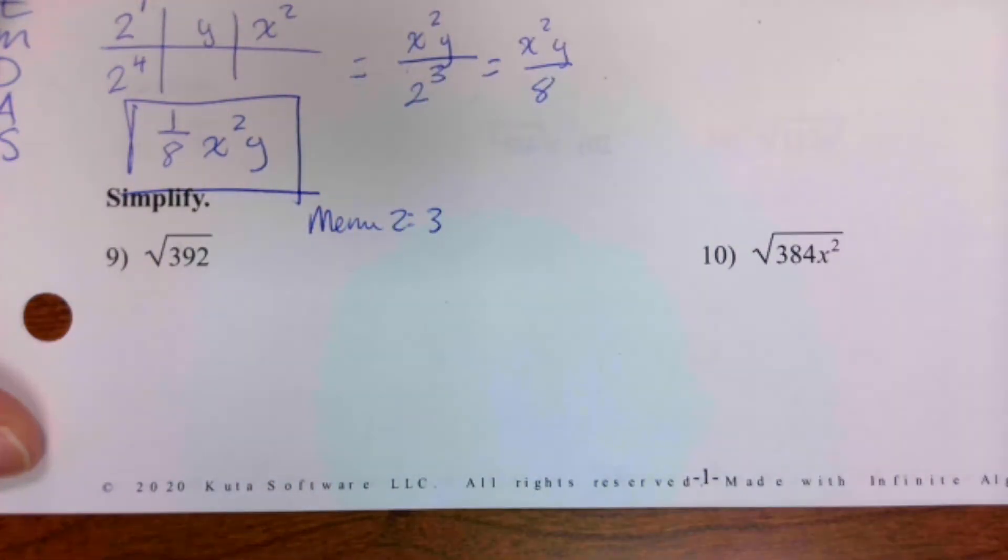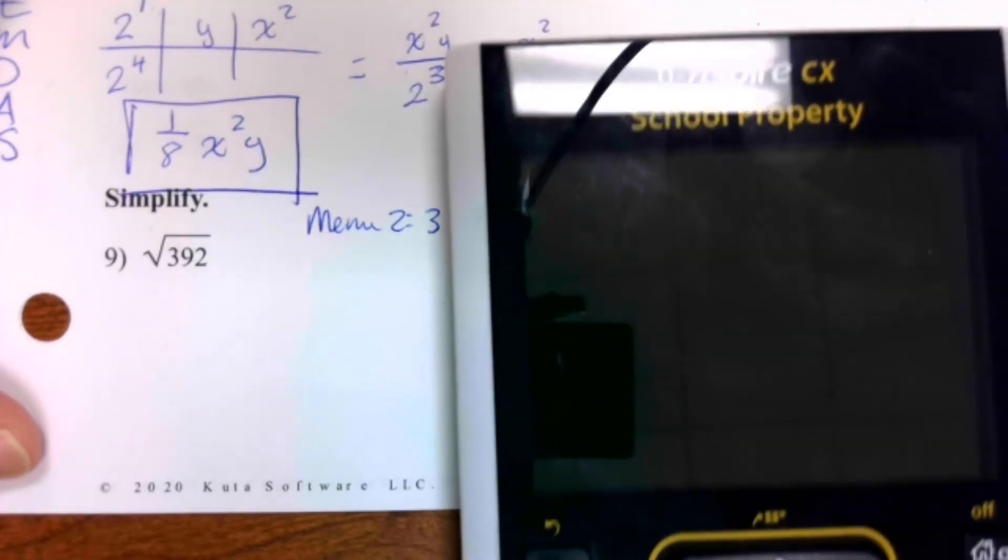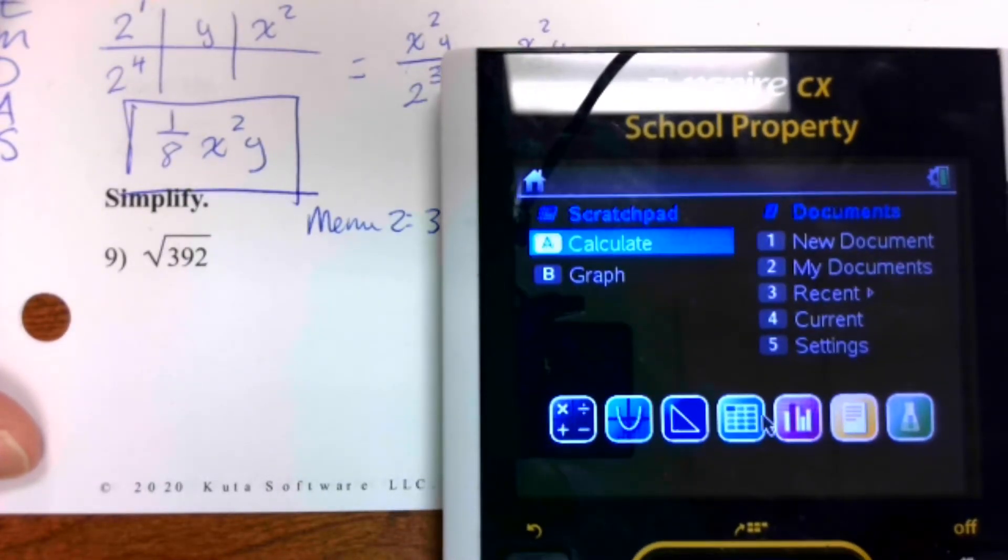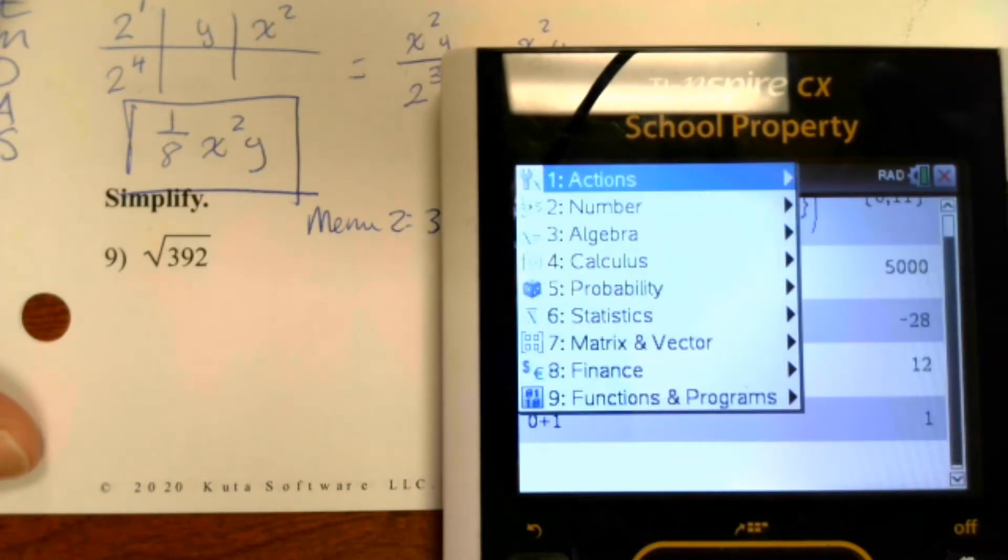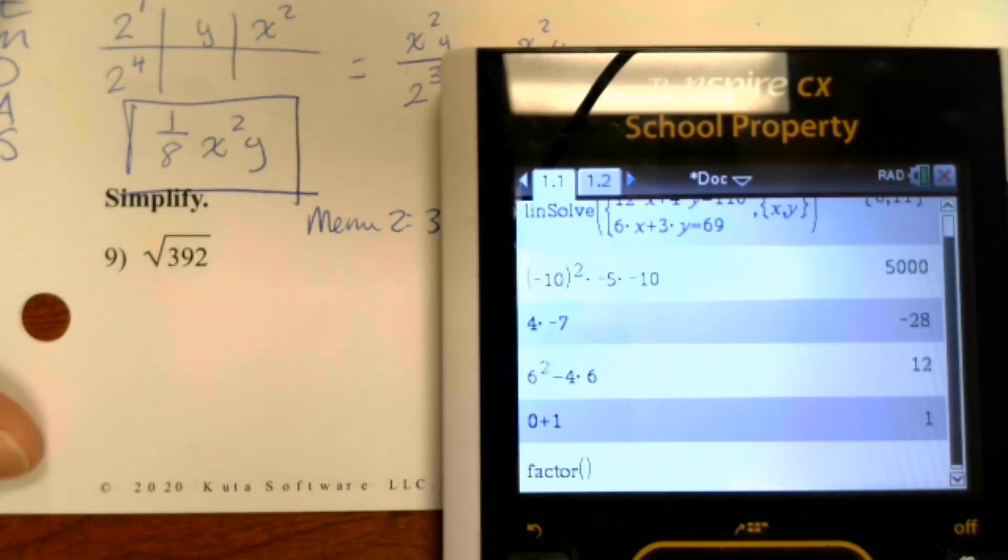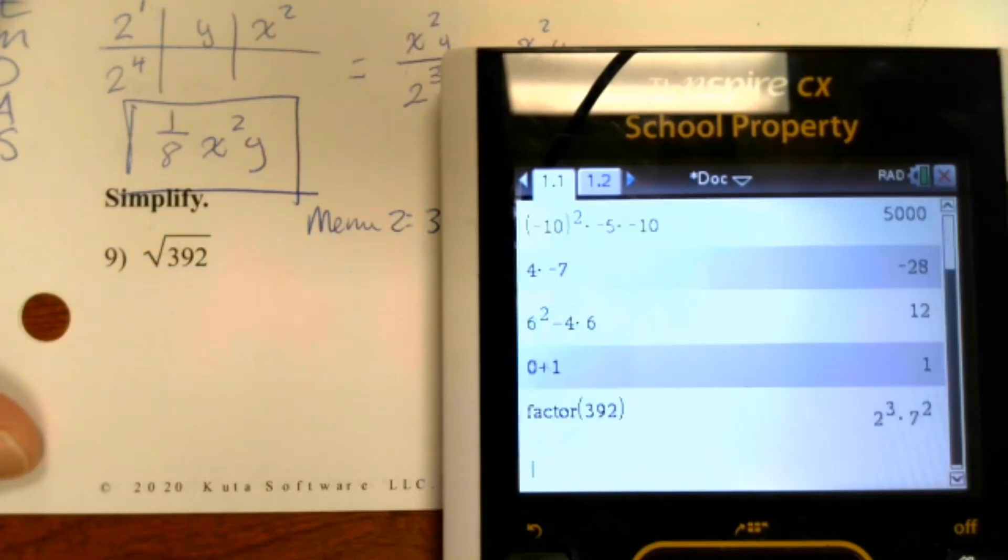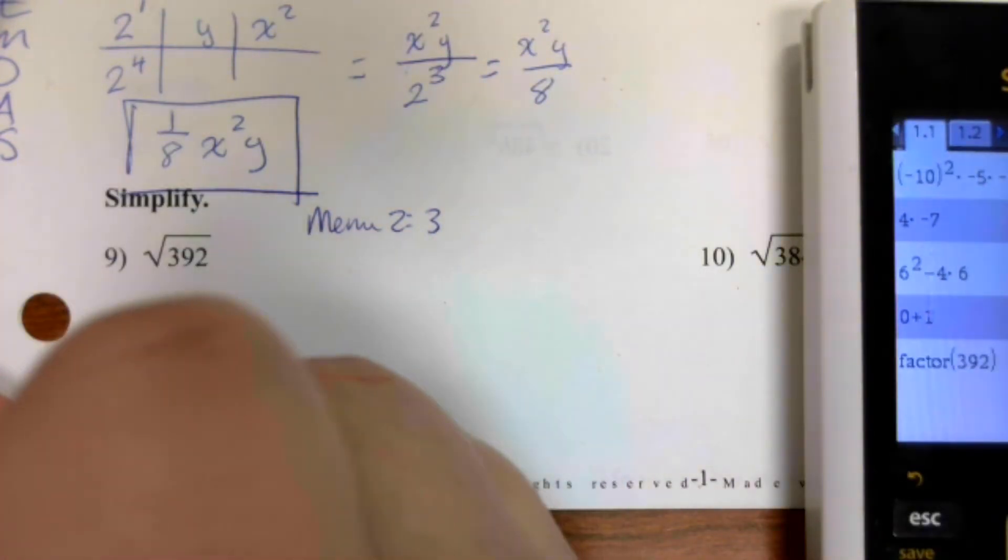Now you've got to remember this: it's menu two three. Menu two three. It's going to say factor, and I'm going to put in just the number on the inside: three nine two. Two to the third, seven squared. Keep your radical.